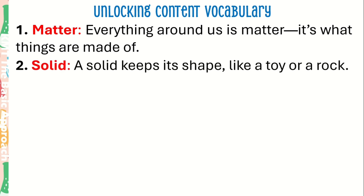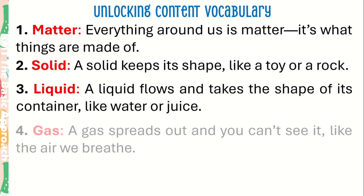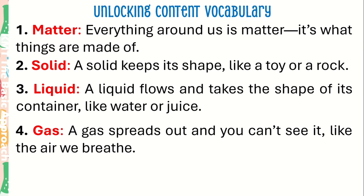Number 2: Solid. A solid keeps its shape, like a toy or a rock. Number 3: Liquid. A liquid flows and takes the shape of its container, like water or juice. Number 4: Gas. A gas spreads out and you can't see it, like the air we breathe.